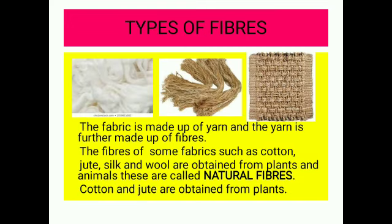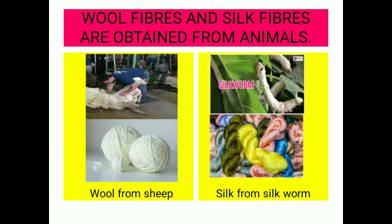Types of fibers. The fabric is made up of yarn and the yarn is further made up of fibers. The fibers of some fabrics such as cotton, jute, silk, and wool are obtained from plants and animals. These are called natural fibers. Cotton and jute are obtained from plants, while wool fibers and silk fibers are obtained from animals.